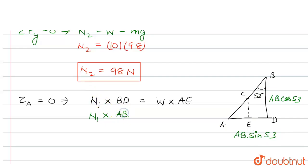So AE is actually half of AD. And AD is AB sin 53, so this would be halved.